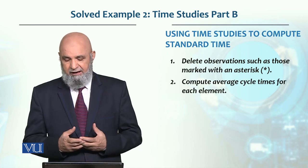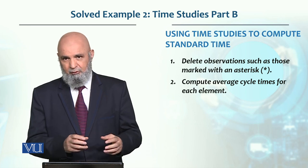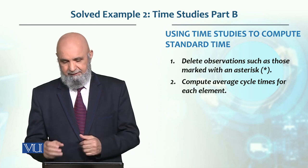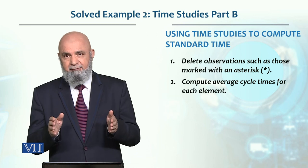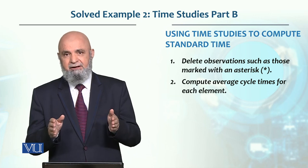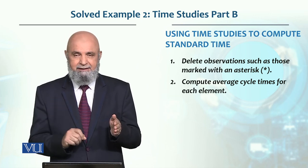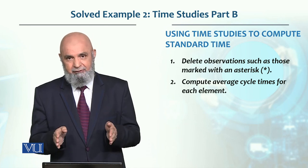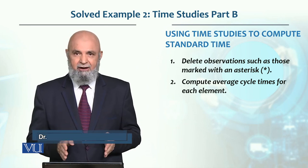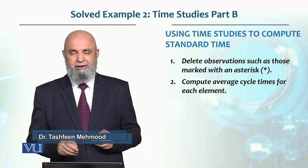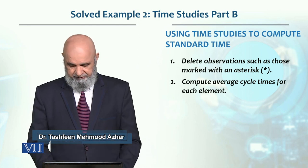Then we compute the average cycle time for each element. For example, the first element has 4 observations because we had to eliminate one. The second element has 5, and the third has again 4 observations. We have to sum them up and divide.